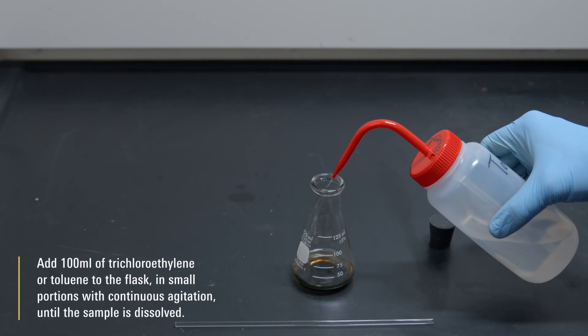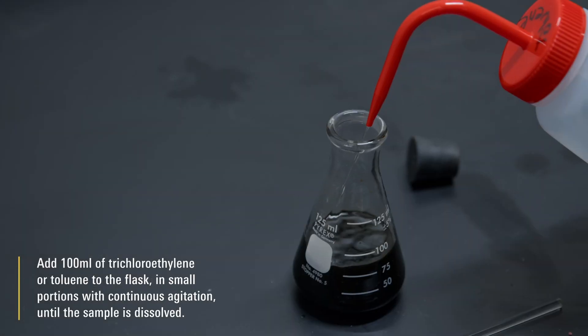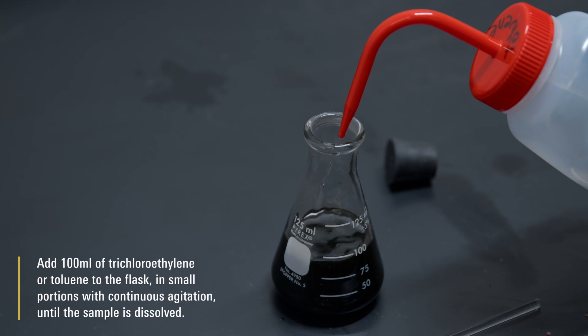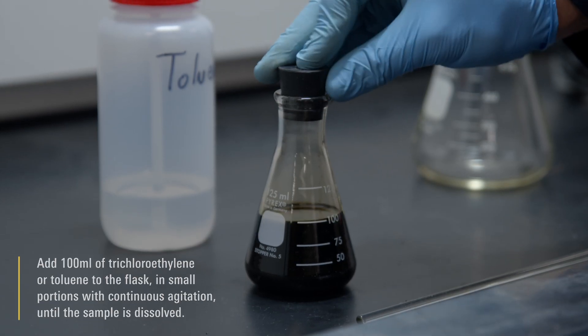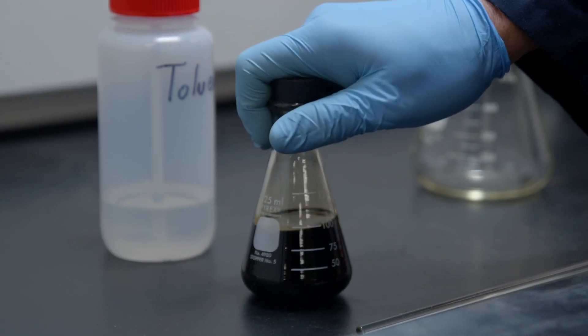Add 100 mL of trichloroethylene or toluene to the flask in small portions with continuous agitation until the sample is dissolved. Then add the stopper.